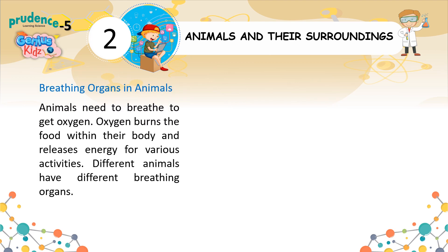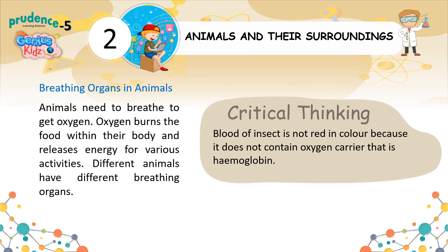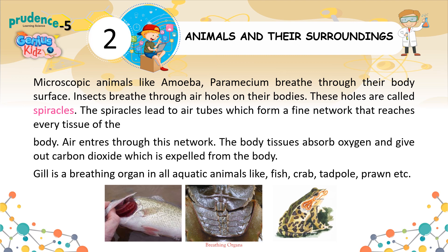Scavengers maintain a balance in nature by preventing the accumulation of dead bodies of animals. Breathing Organs in Animals. Animals need to breathe to get oxygen. Oxygen burns the food within their body and releases energy for various activities. Different animals have different breathing organs. Critical thinking: The blood of insects is not red in colour because it does not contain the oxygen carrier haemoglobin. Microscopic animals like amoeba and paramecium breathe through their body's surface. Insects breathe through air holes on their bodies called spiracles. The spiracles lead to air tubes which form a fine network that reaches every tissue of the body.